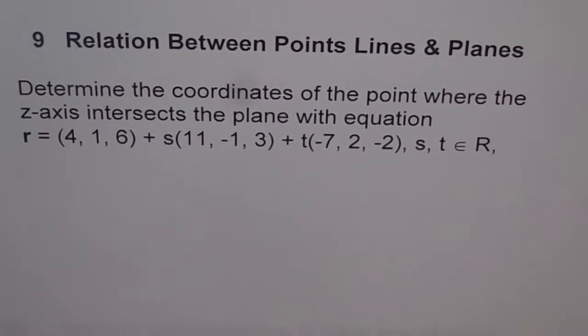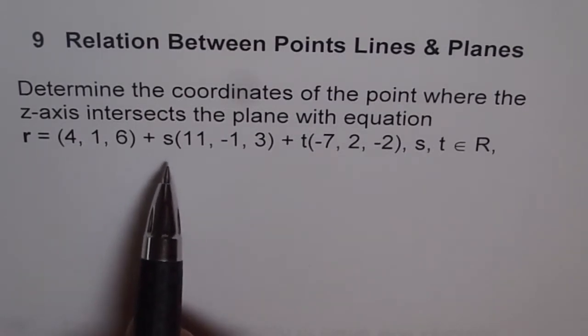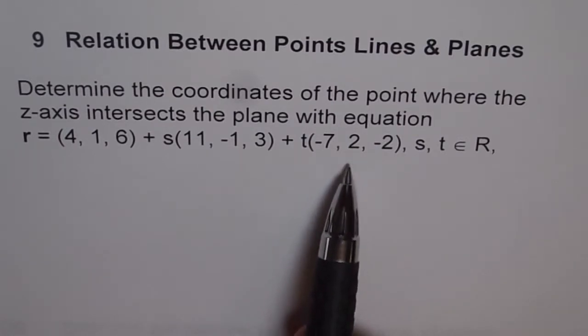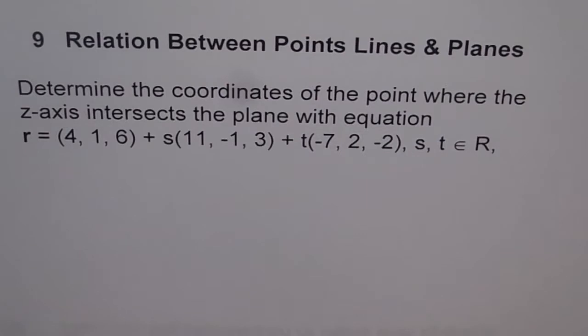Chapter 9, Relation between points, lines and planes. Here is one question which says determine the coordinates of the point where z-axis intersects the plane with equation r equals (4,1,6) plus s(11,-1,3) plus t(-7,2,-2) where s and t belongs to set of real numbers.